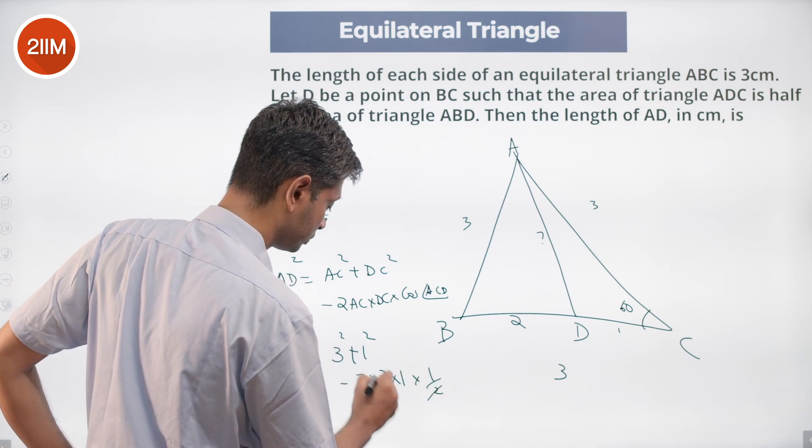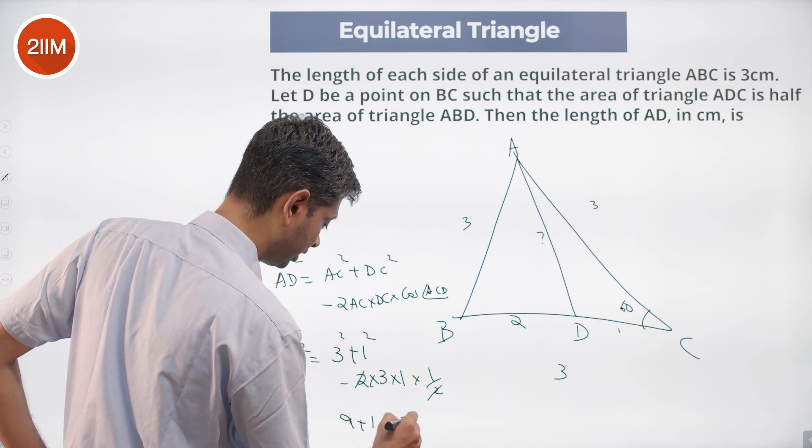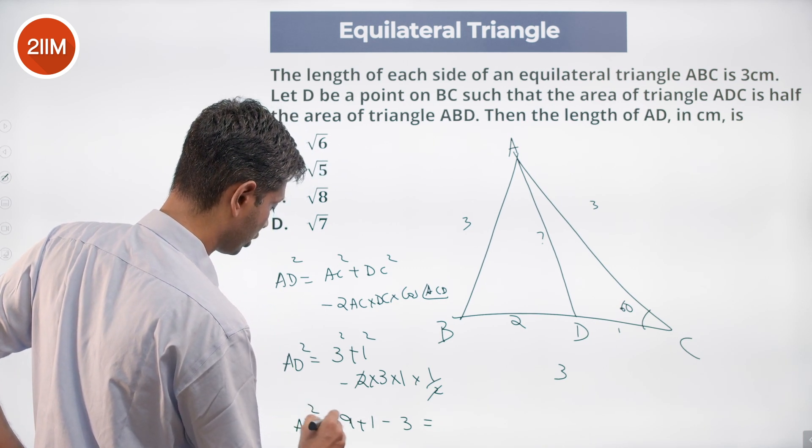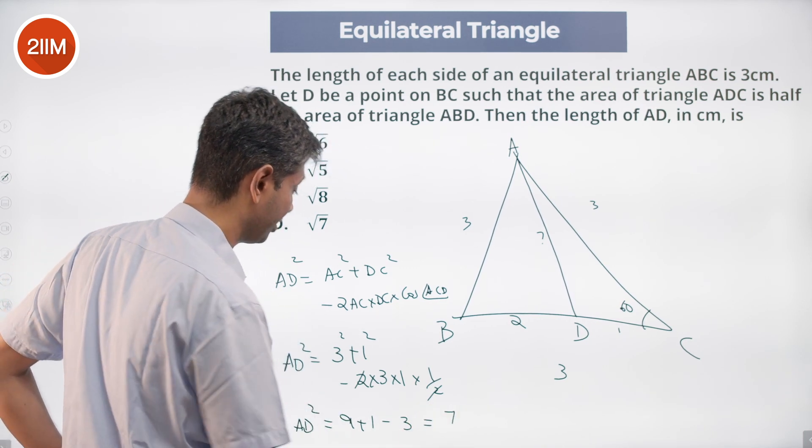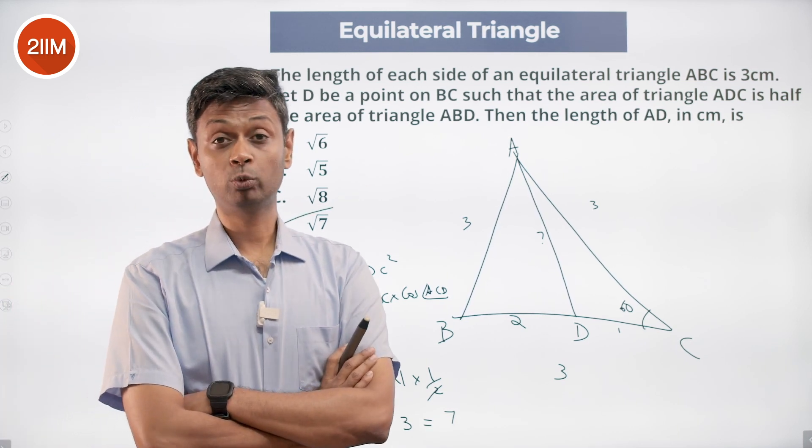That's 9 plus 1 minus 3. So AD squared is 10 minus 3, which is 7, and AD is √7. If you know cosine rule, this becomes super easy.